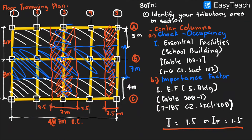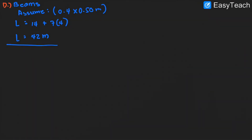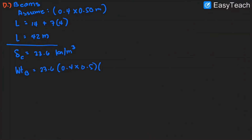That 42 meters comes from 7 times 4 equals 28, plus 14, equals 42 meters — those are all our beams shown in the figure, not yet including the corridor. The density of concrete is 23.6 kN/m³. The total weight of the beam is 23.6 times 0.4 times 0.5 times 42 meters, giving 198.24 kilonewton, rounded to 199 kilonewton.